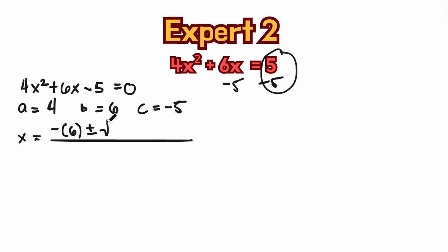So plus or minus square root of, this one is b as well. So we have b squared, we have 6 squared.